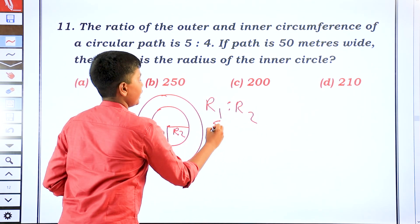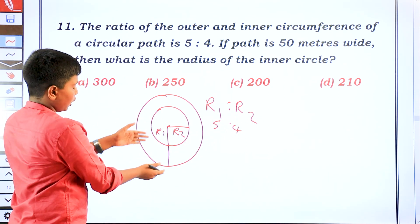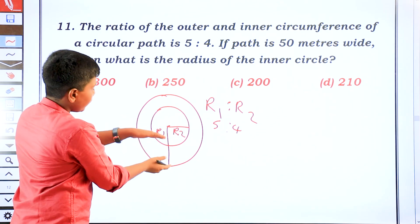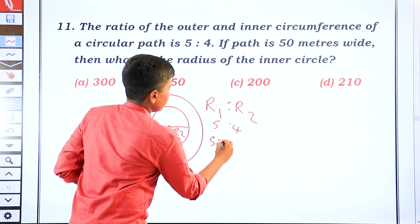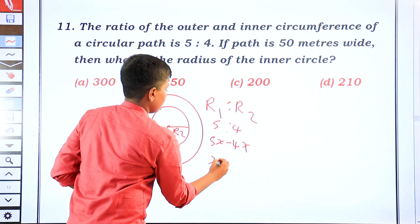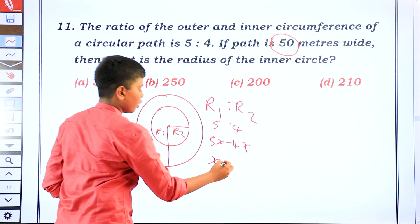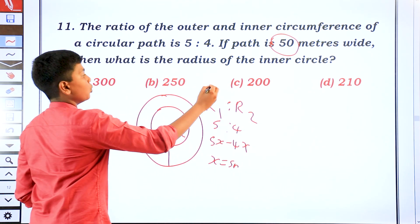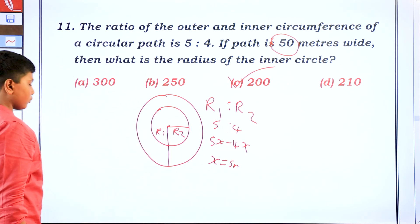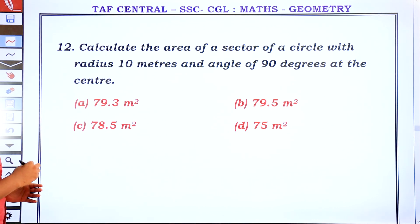Here R1 to R2 is 5 to 4. So R1 and R2 can be written as 5x and 4x. The bath width is R1 minus R2, so 5x minus 4x equals 50 meters. Therefore x equals 50. The inner radius R2 equals 4x, which is 4 into 50, giving 200 meters. Wait — the square value works out to 80 meters.